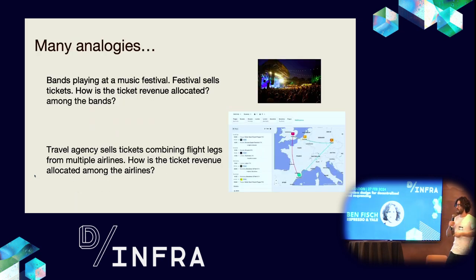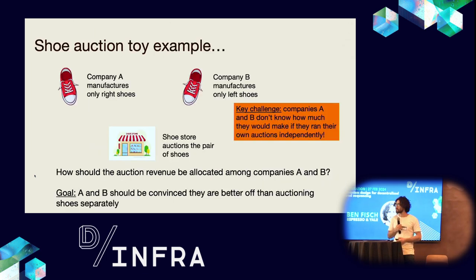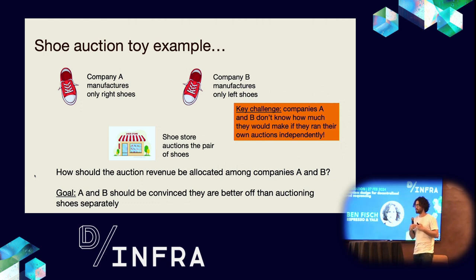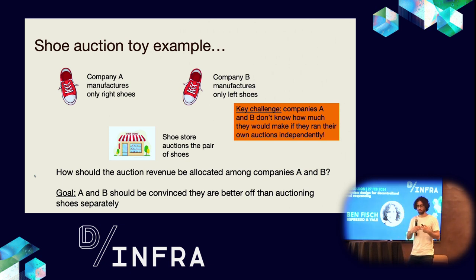There are many analogies to this. You can think of bands playing at a music festival — a festival sells tickets, how is the ticket revenue allocated among the bands? Travel agencies sell tickets combining flight legs from multiple airlines — how is the ticket revenue allocated among the airlines? Consider a toy example: two companies, one manufactures left shoes and one manufactures right shoes. When the shoe store auctions the pair of shoes together, how should the auction revenue be allocated among the two companies, while convincing each they're better off selling together than separately?